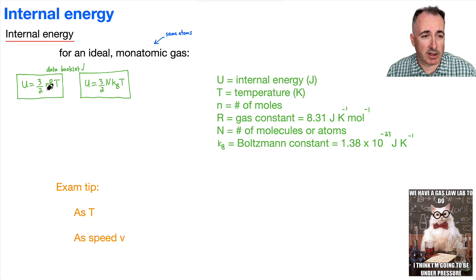And because these two right here are equal, that means we can say that this nR and this NKB, we can actually put them together, and we can say then, oh, that means then that nR, in other words, the number of moles times this constant, must be equal to the total number of atoms times Boltzmann's constant. So this is also something you could say.